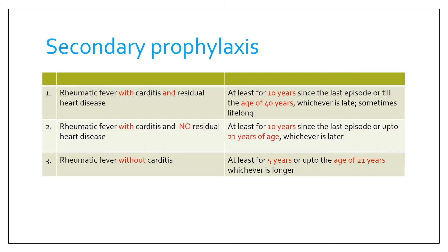If the patient has rheumatic fever with carditis but no residual heart disease, give prophylaxis for at least 10 years since the last episode or up to 21 years of age, whichever is later. If the patient has rheumatic fever without carditis, give prophylaxis for at least 5 years or up to age 21 years, whichever is longer.